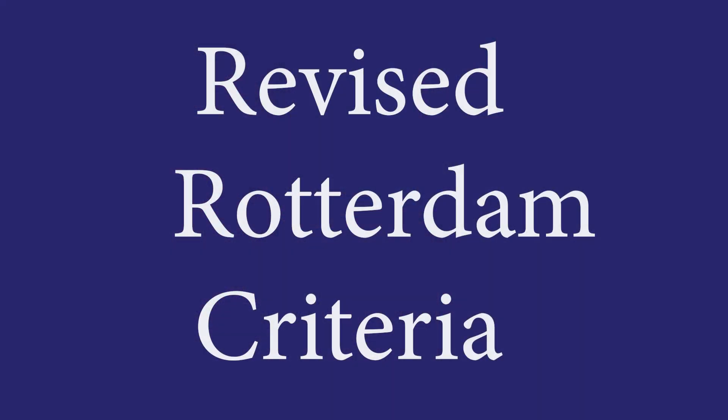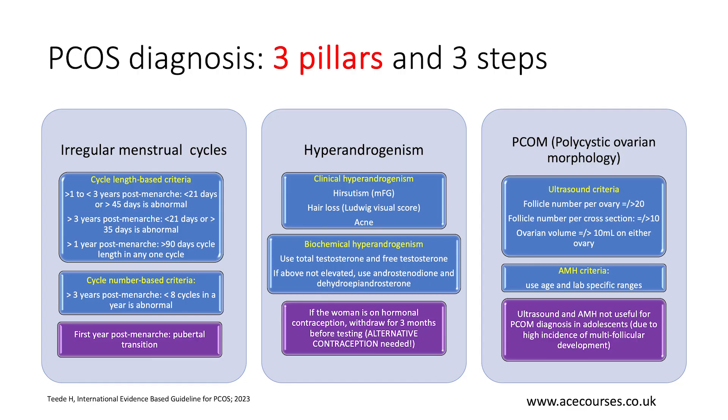We use the revised Rotterdam criteria for diagnosing polycystic ovary syndrome. This criteria requires two of the three pillars of diagnosis to be present. The first pillar is irregular menstrual cycles, the second is hyperandrogenism or excess male hormone in the blood, and the third is polycystic ovarian morphology — when you get lots of little antral follicles in the ovaries. To make the diagnosis we need to define each pillar precisely.